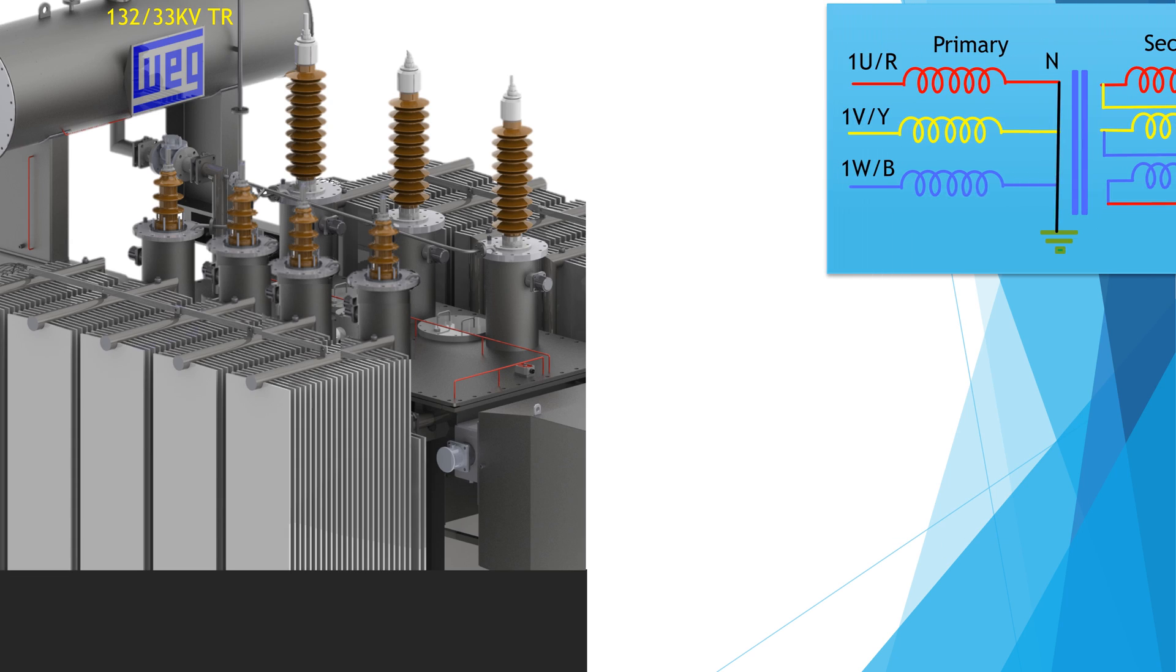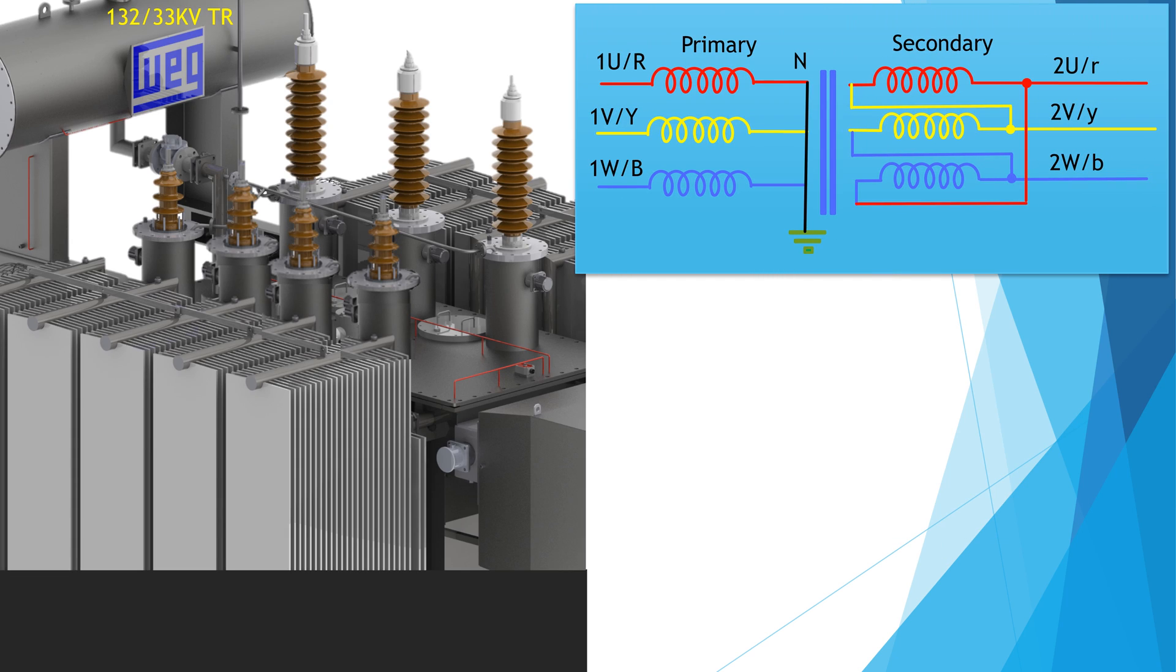Now we are watching the connection diagram of the transformer under test. Primary is connected in star connection and secondary is connected in delta connection.